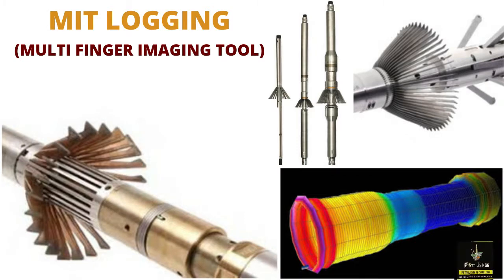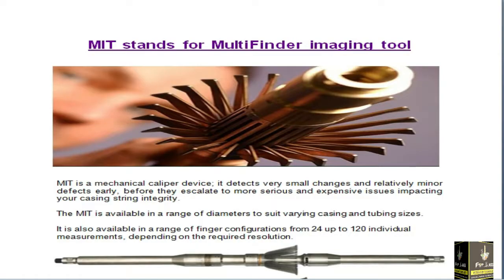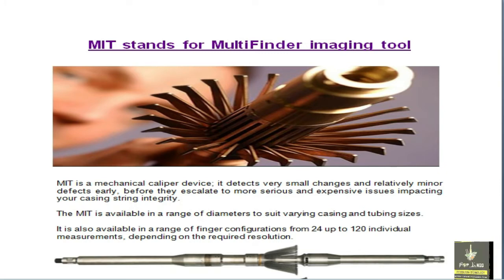Today I'm going to tell you about what is MIT logging and how we can use it to detect small or bigger issues in the casing. MIT is basically a Multi-Finger Imaging Tool — a mechanical caliper device. It detects minor issues impacting the casing and saves you from expensive problems like small damage, small leakage, or small issues in the casing that we can detect before going for any expensive tool.